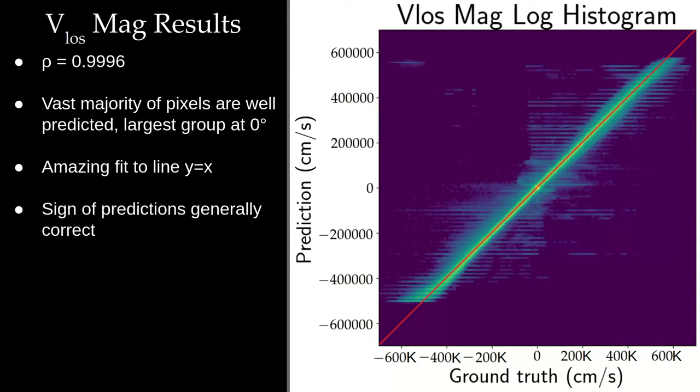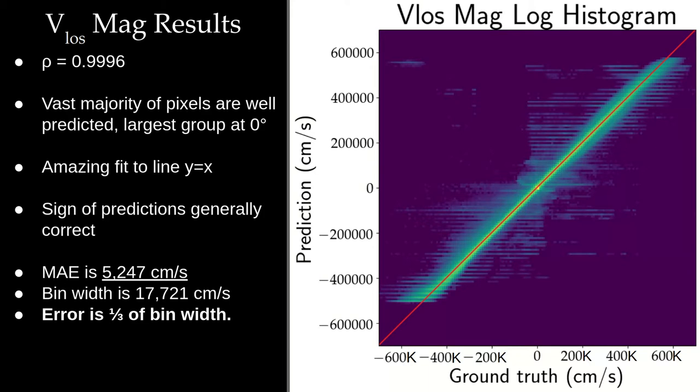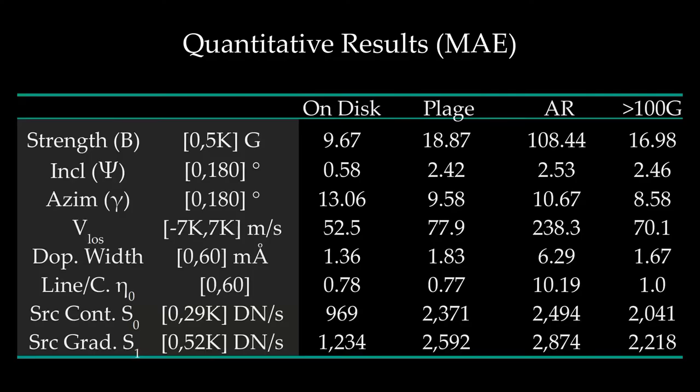Finally, we can look at the velocity of line of sight magnitude plasma, and we can see a very strong correlation in the row at the top, but also we can see average error that is quite small, given the range goes from minus 700,000 to plus 700,000 and a strong fit to Y equals X. So those were some qualitative quantitative results. And I have a full table here.